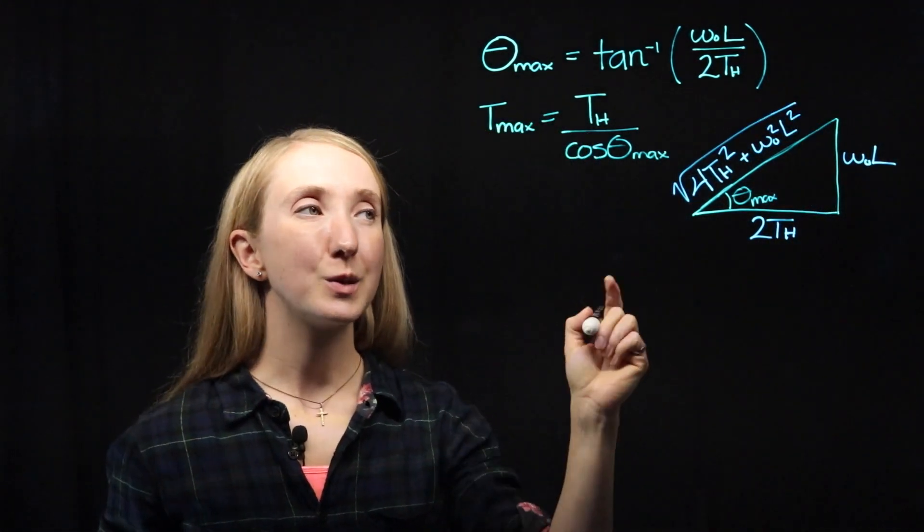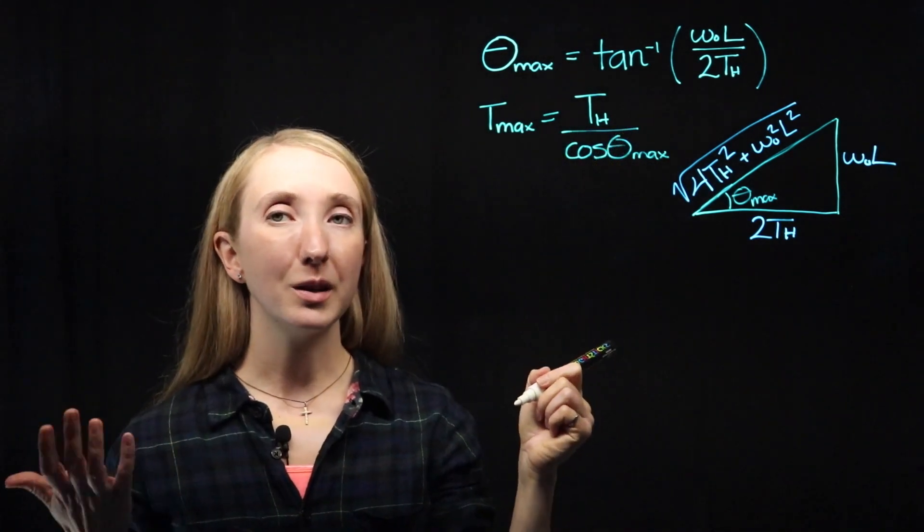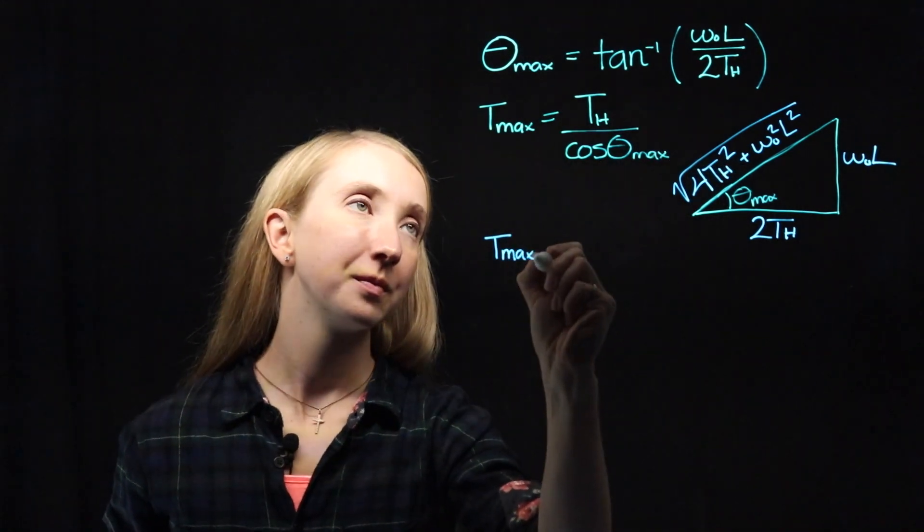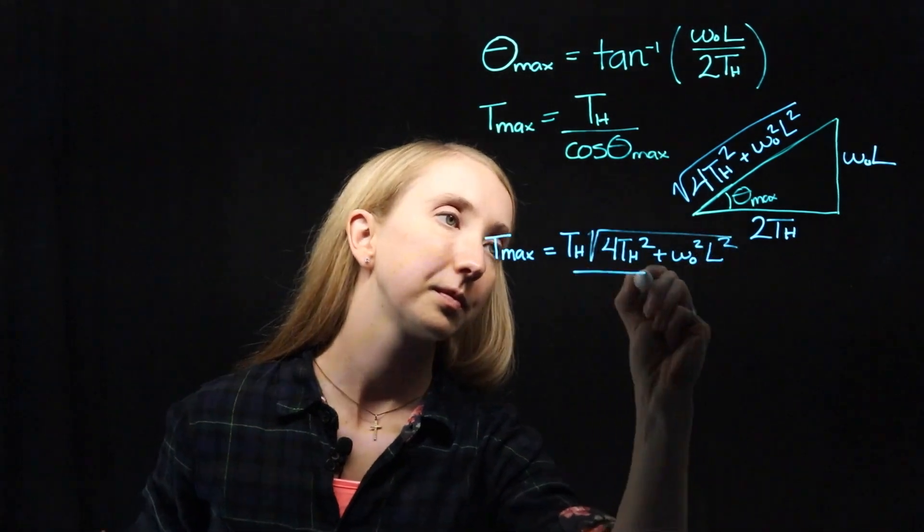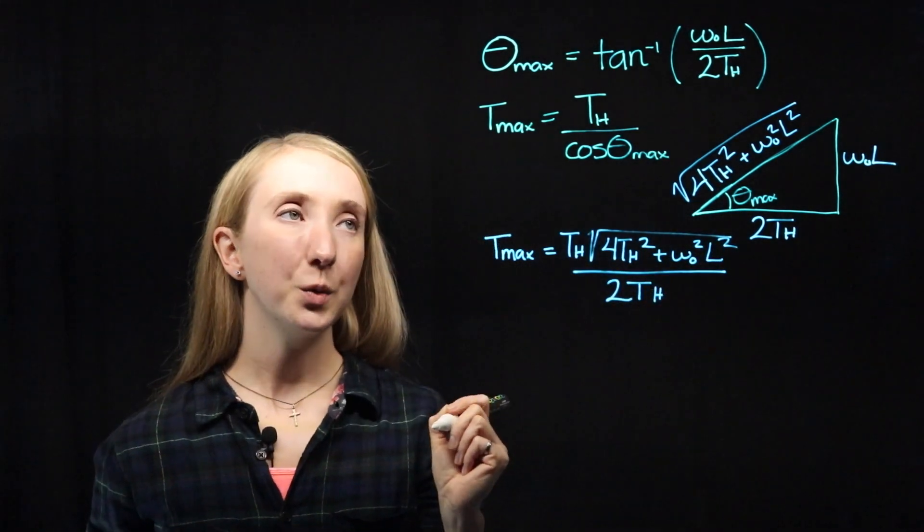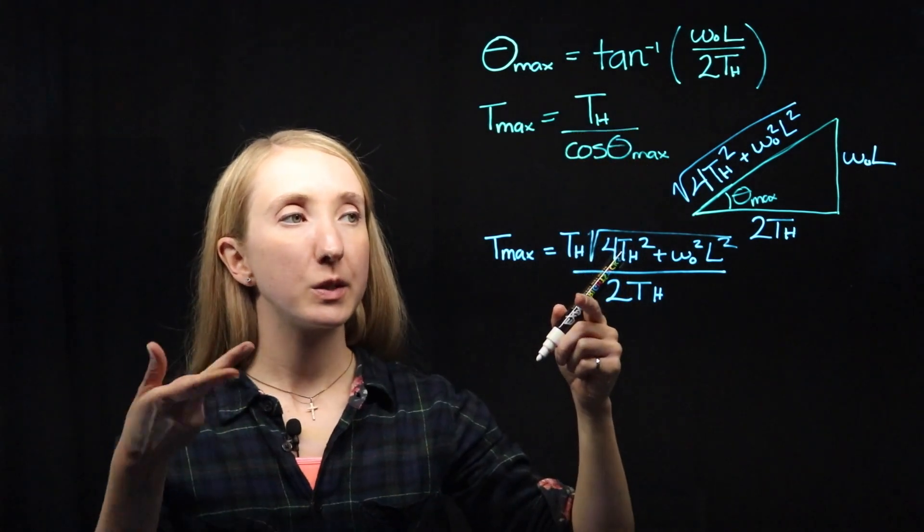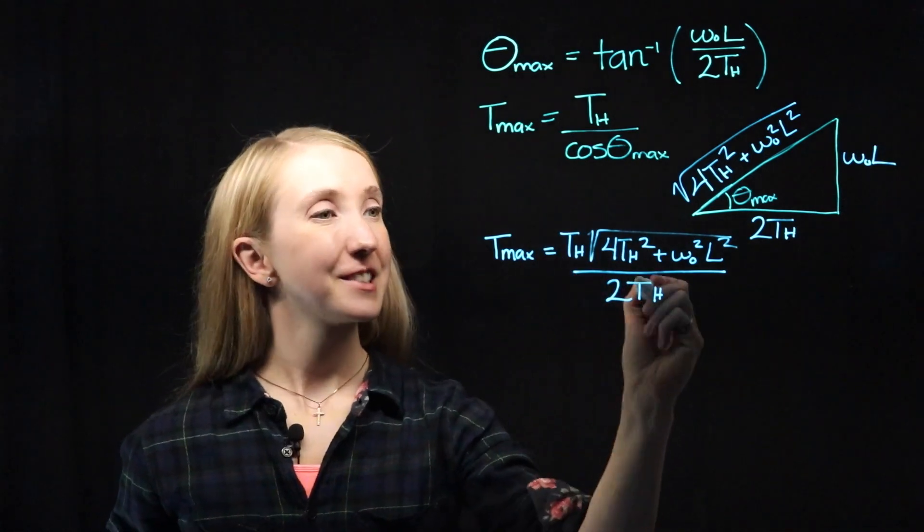Now we can use our triangle to replace cosine of theta. Because cosine just means adjacent over hypotenuse. Note that because cosine was on the bottom, we write the inverse, which is hypotenuse over adjacent. And we can simplify this.